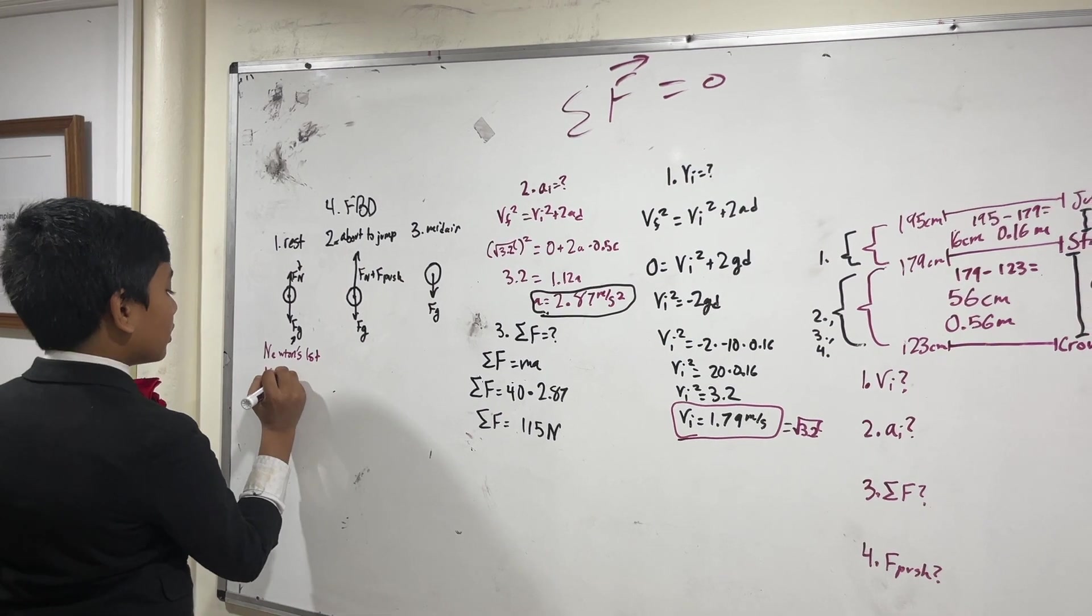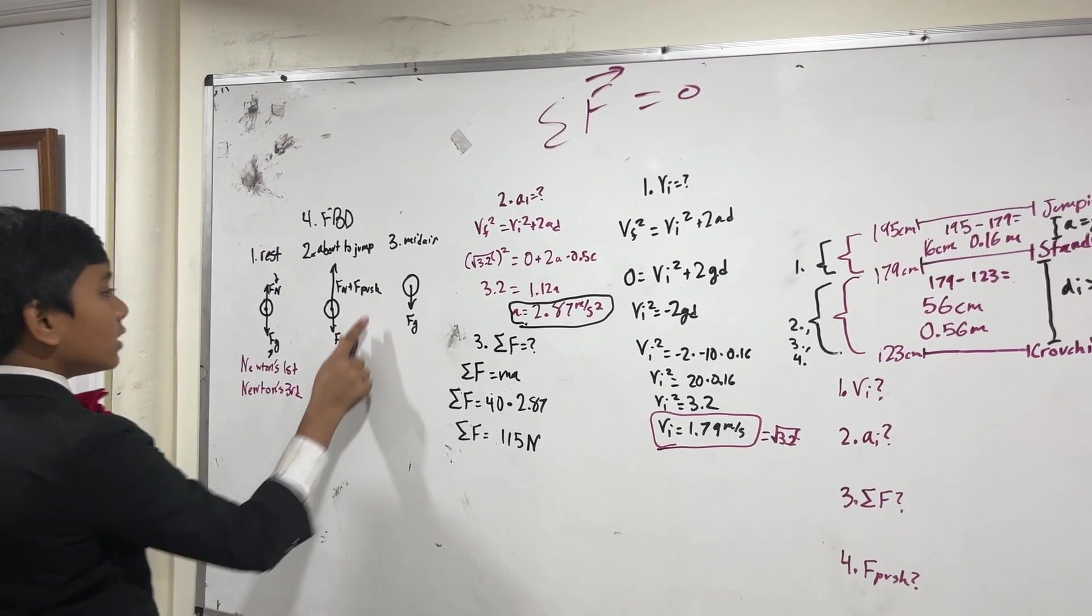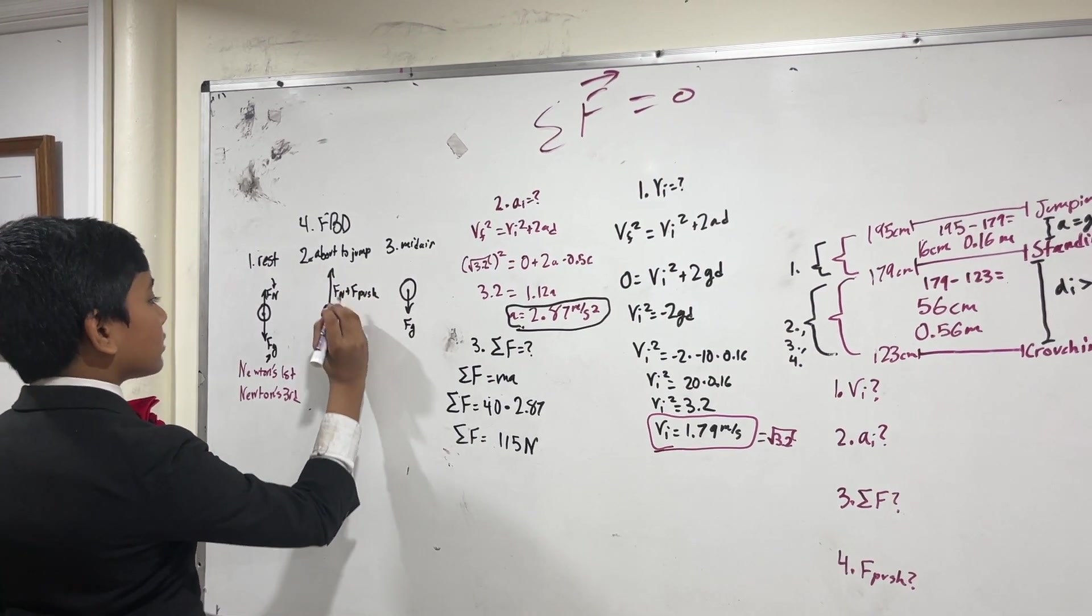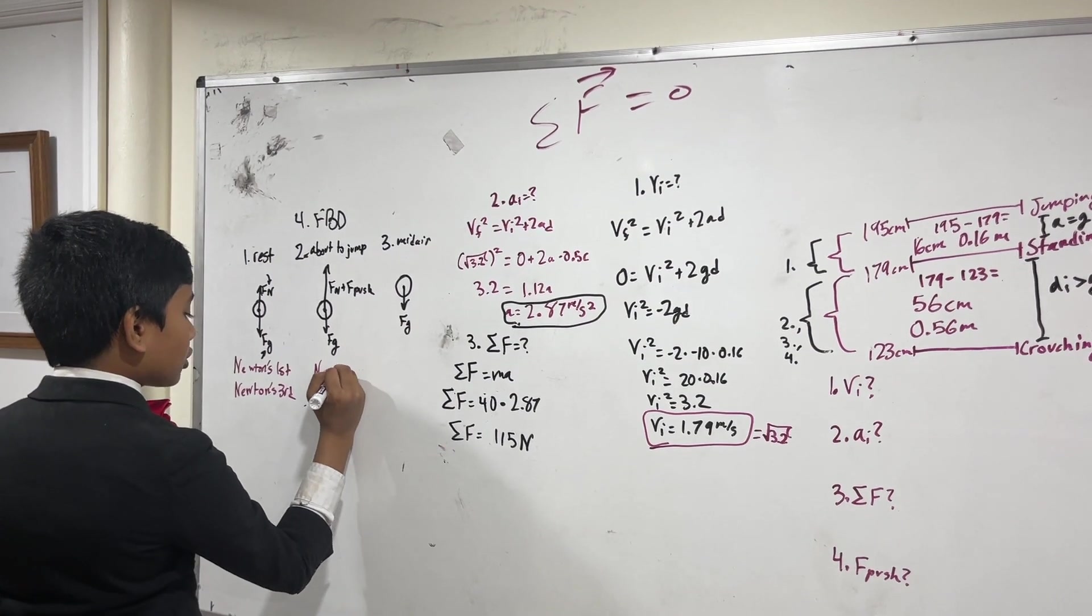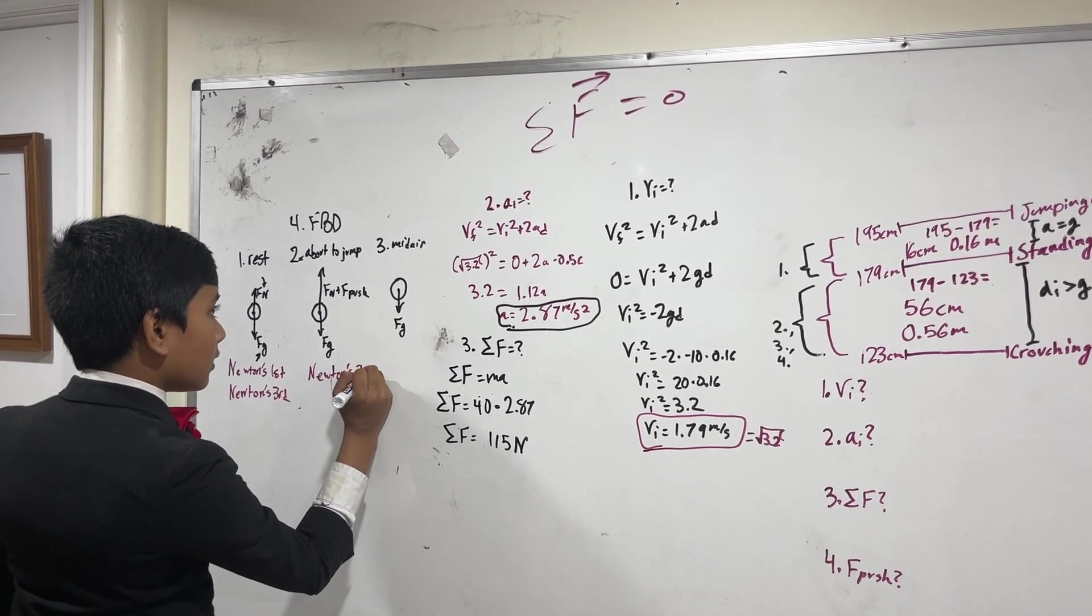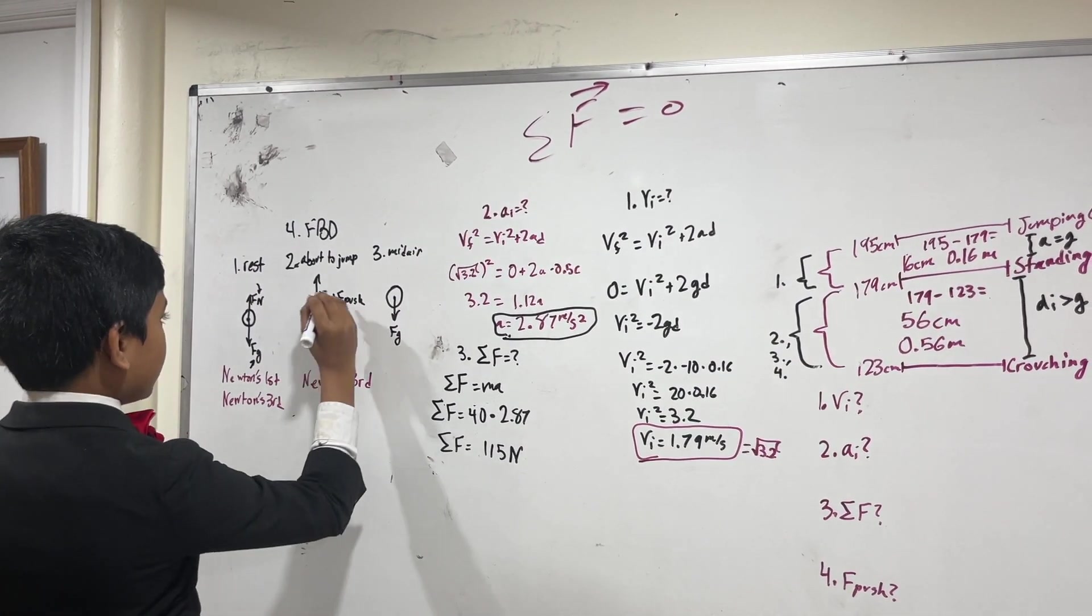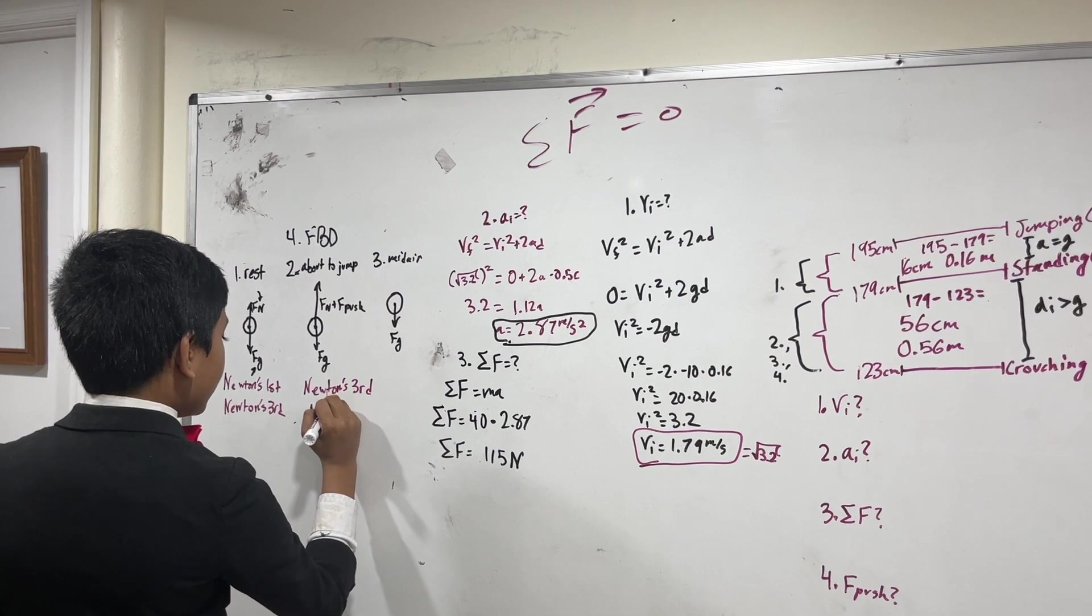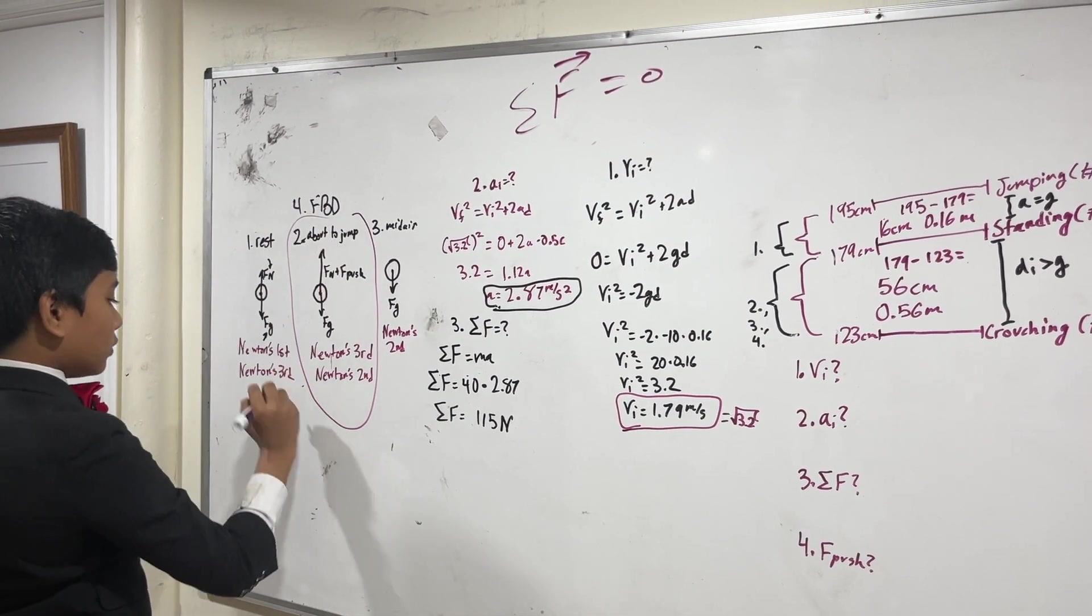This is an example of Newton's first law, but because of Fn, it's also an example of Newton's third law. Here, F plus being exerted on the ground, and the ground exerting the same magnitude back, is Newton's third law. And this also exhibits Newton's second law as well.